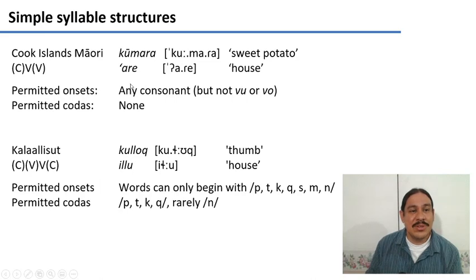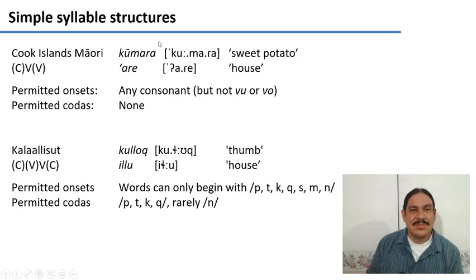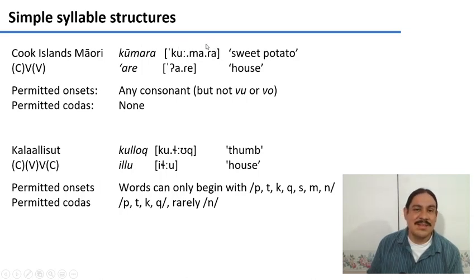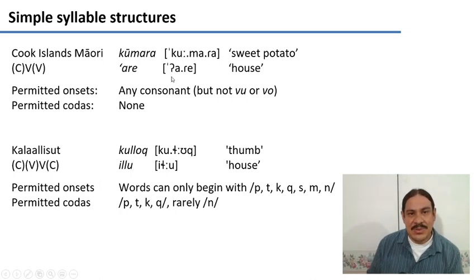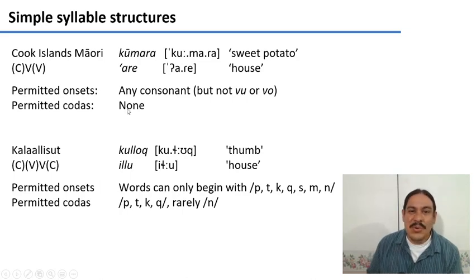So in Cook Islands Māori, you can have syllables that are consonant-vowel, consonant-vowel, consonant-vowel, as in kūmara, meaning sweet potato. Likewise in are, meaning house, it's consonant-vowel, consonant-vowel, and that's it. There are no codas, and you cannot have a consonant in coda position.